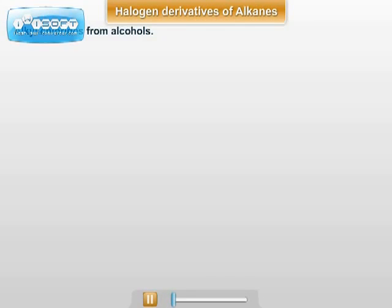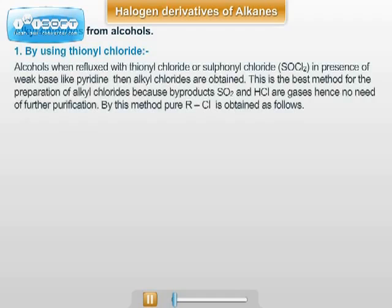Reaction of alkyl chlorides from alcohols: alcohol when refluxed with thionyl chloride, that is SOCl2, alkyl chloride is formed along with HCl and SO2. In this reaction, the by-products SO2 and HCl are in gaseous state and that is why they leave the reaction mixture. By this method of preparation, pure alkyl chloride is obtained.